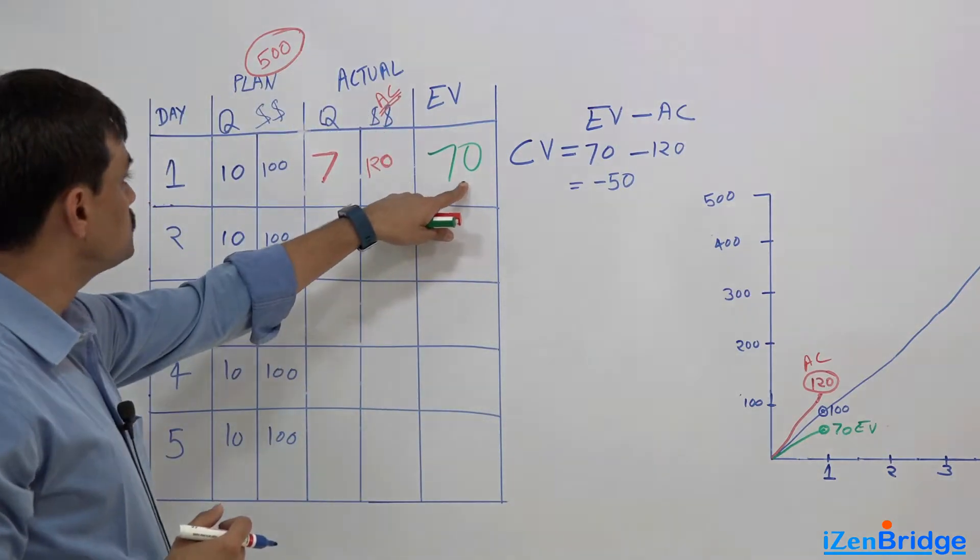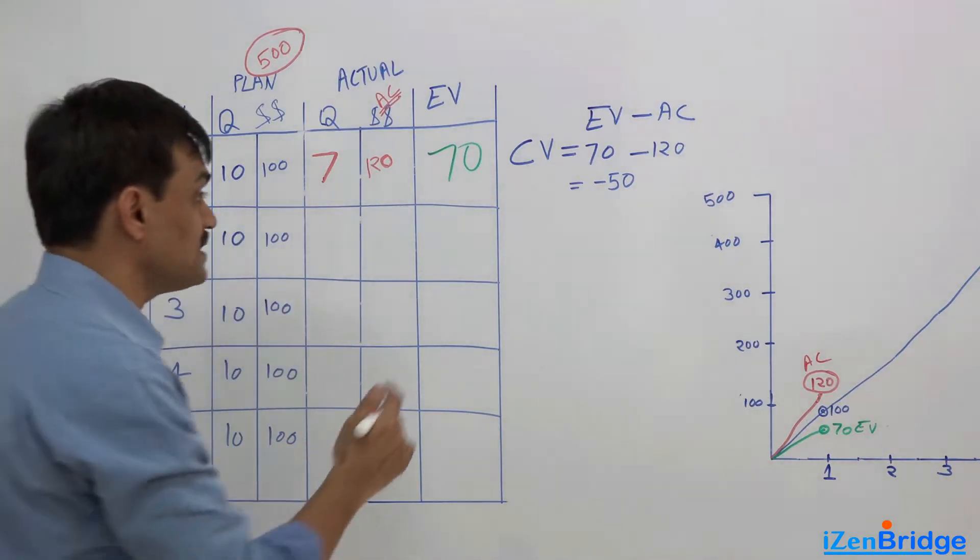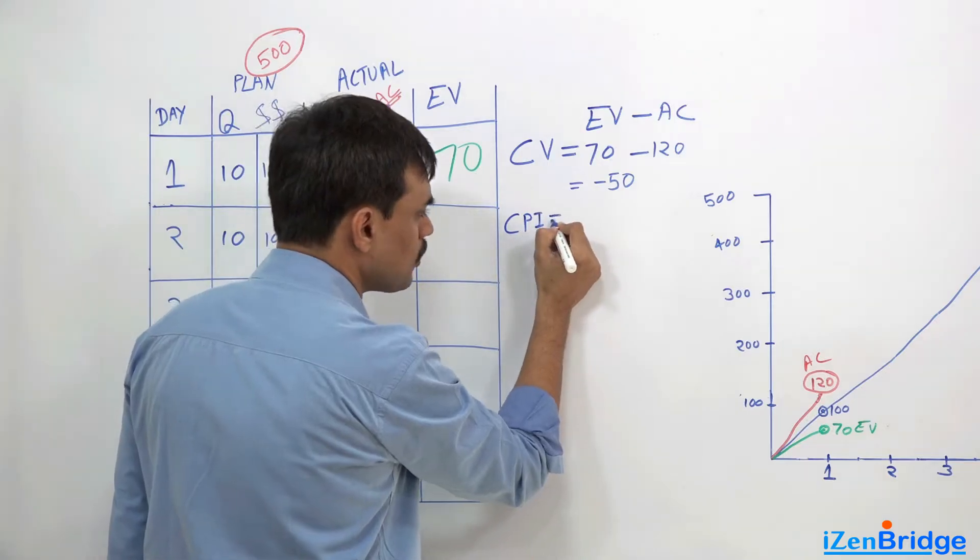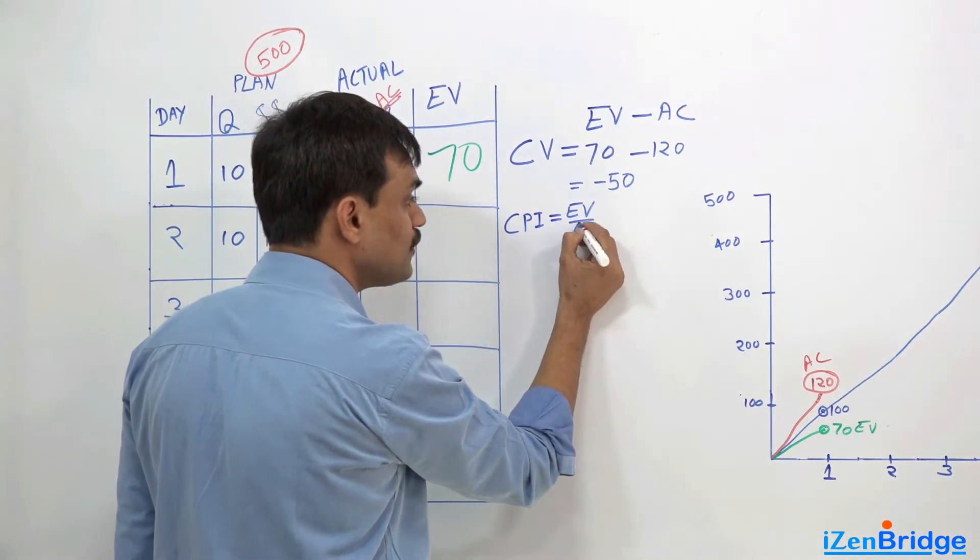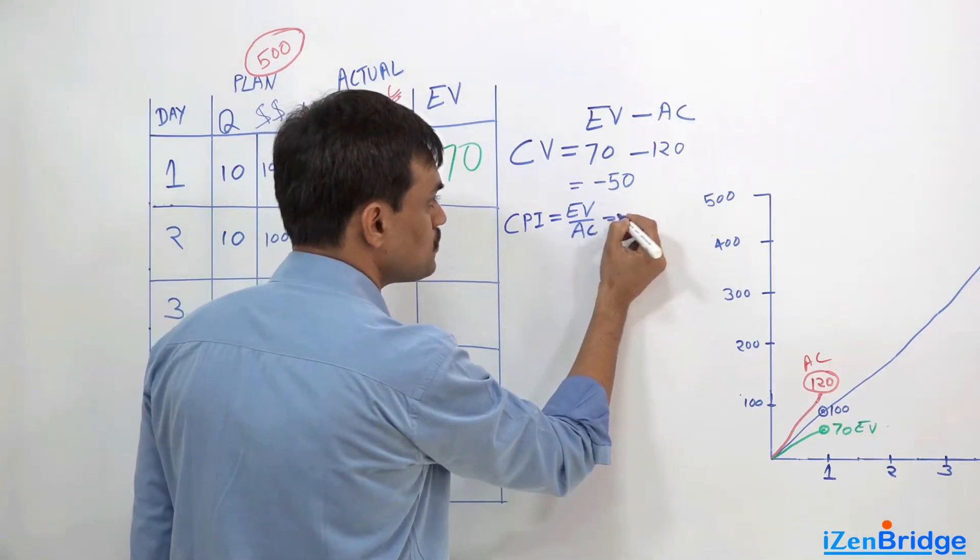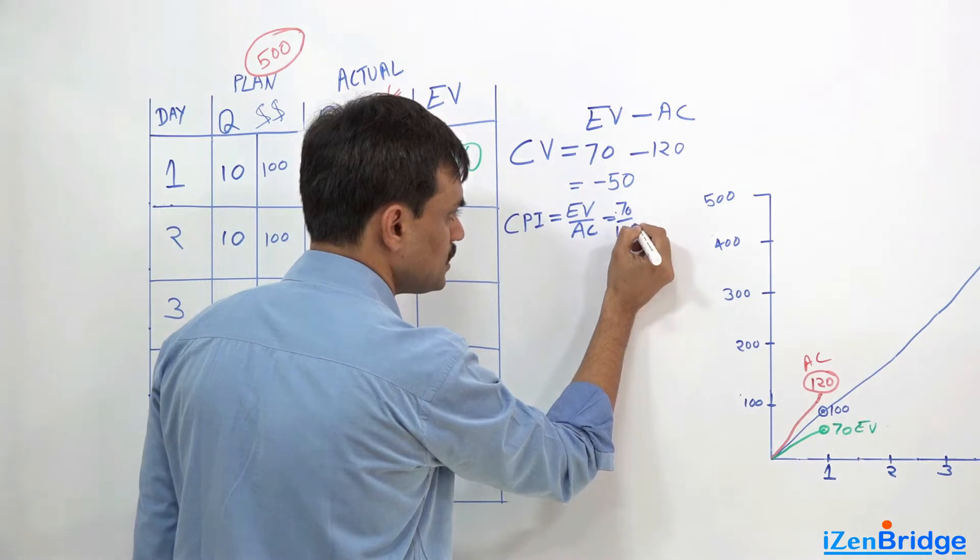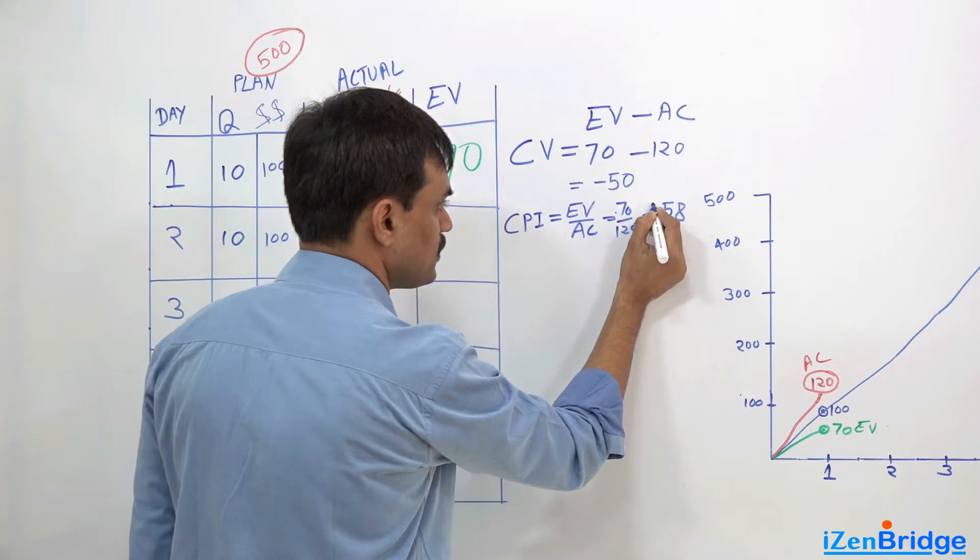Earned value minus actual cost. And we also have something called cost performance index, we call it CPI, which is also representing the information in a different way - earned value divided by actual cost, which means 70 divided by 120 comes near to 0.58.